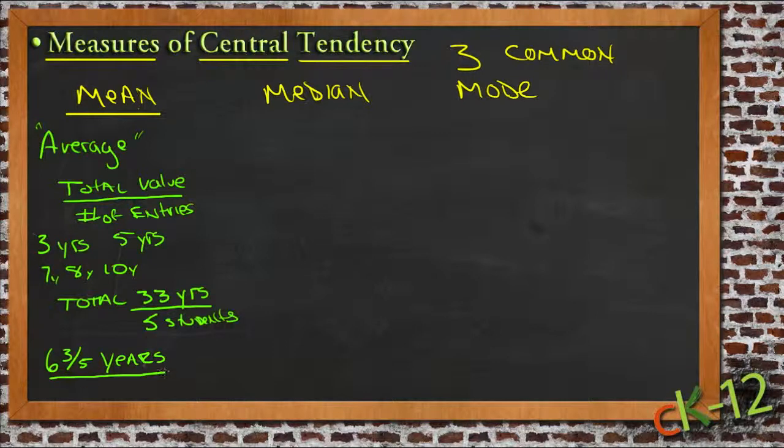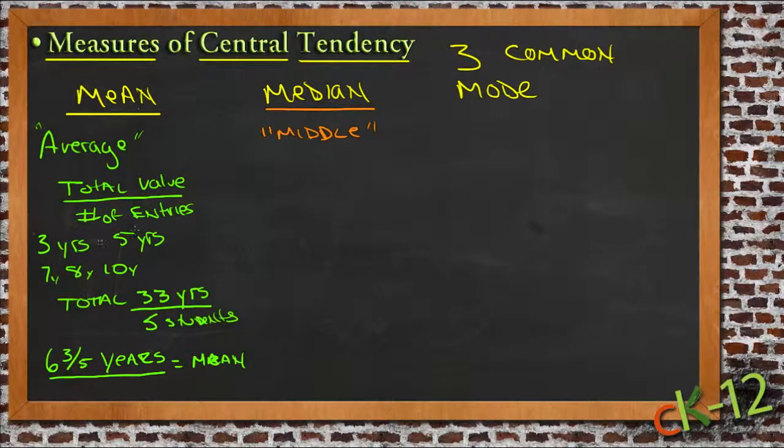The second way to calculate the measure of central tendency is the median. The median simply means the middle number. Using the same group of students, to find the median I line up the ages in order: 3 years, 5 years, 7 years, 8 years, and 10 years. Once I have all my numbers in order, I figure out what number's in the middle.